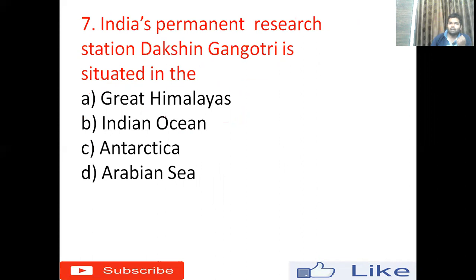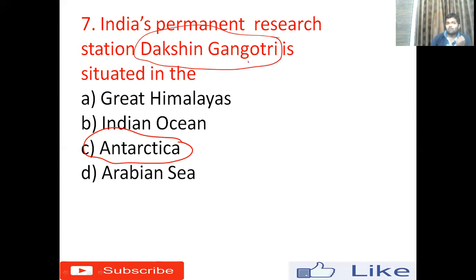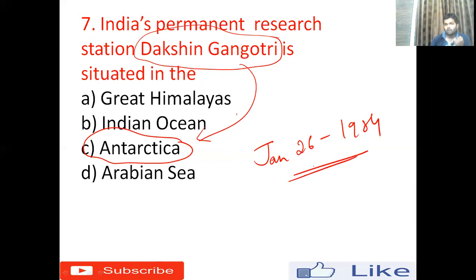Seventh question: India's permanent research station Dakshin Gangotri is situated in — option A: Great Himalayas, option B: Indian Ocean, option C: Antarctica, option D: Arabian Sea. The right answer is option C — Antarctica. Dakshin Gangotri is one of India's prestigious research centers where continuous research is conducted. It was established on January 26, 1984. Biological and physical experiments are continuously carried out there.